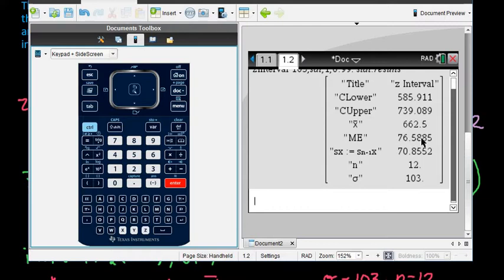And it tells us that our margin of error is 76.58. So this is really within about 77 points from the mean. And right here it gives us our x-bar. So the 662.5 is given to us as well as the interval.